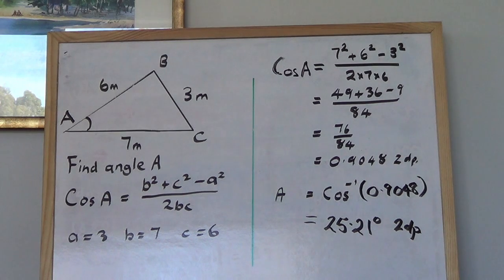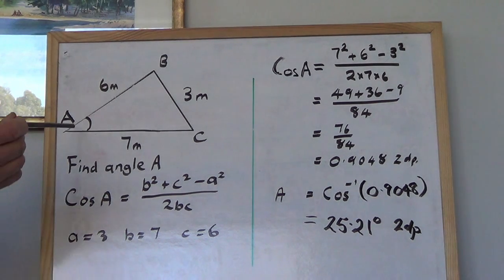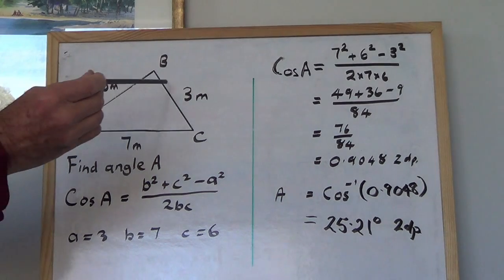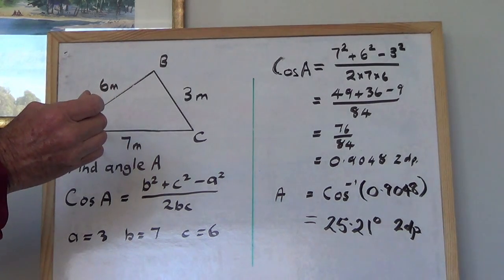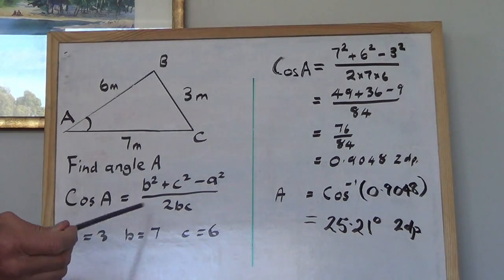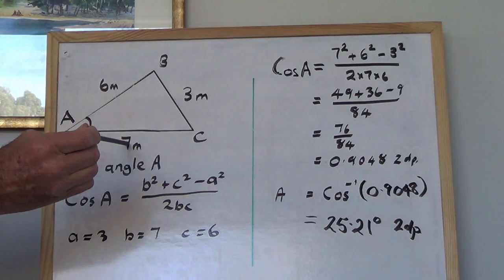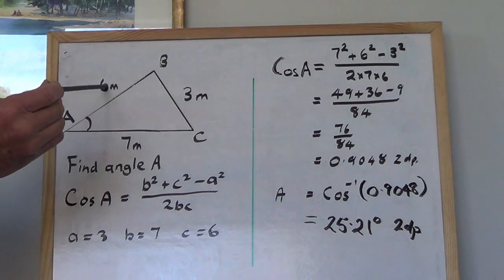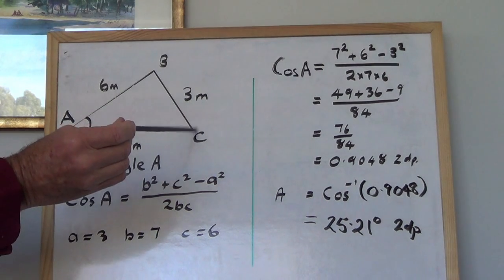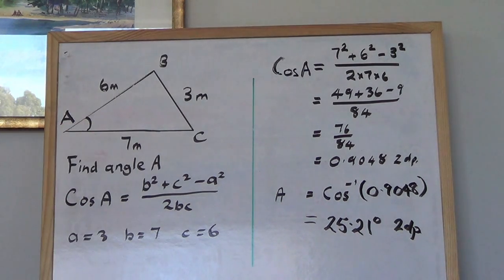Once again, we look at the sides. Side a is opposite angle A. There's angle A, there's side a which is 3. There's side b, sorry there's angle b, that's side b right there. And that side c there because it's opposite angle C, so c is 6. So we put these numbers into here.